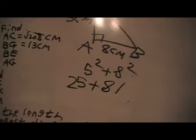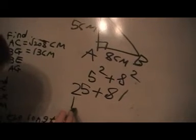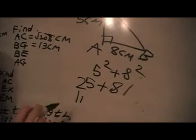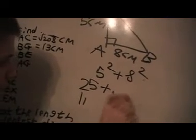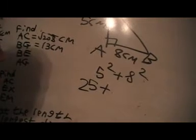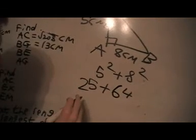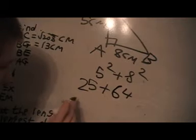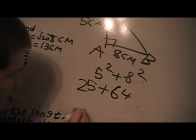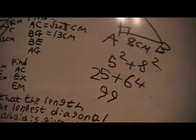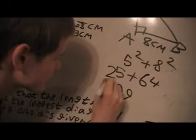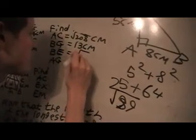Wait, 8 squared is 64 not 81, so then we'll get not 100, we'll get 89. So it's the square root of 89.